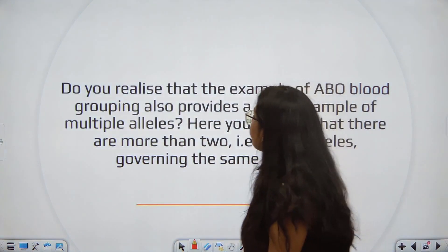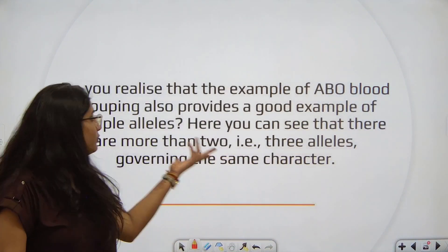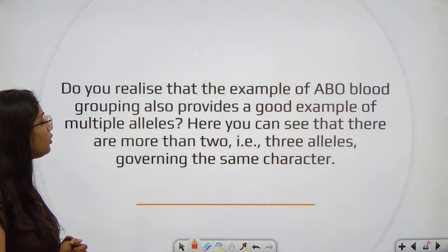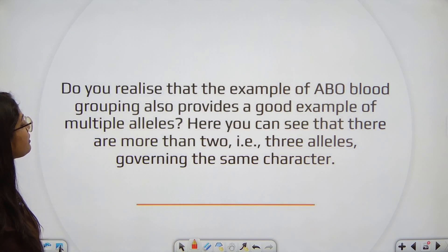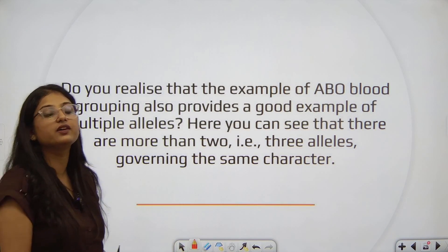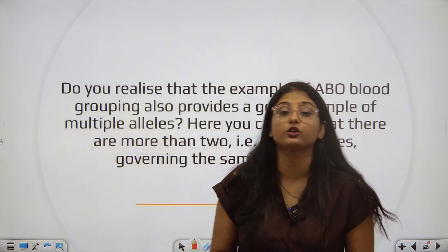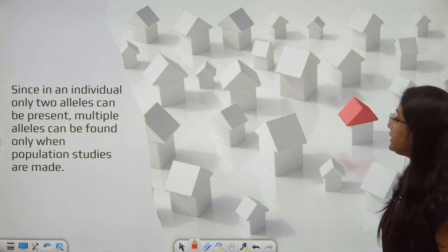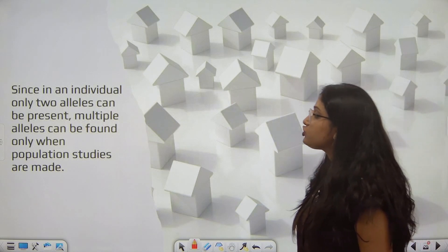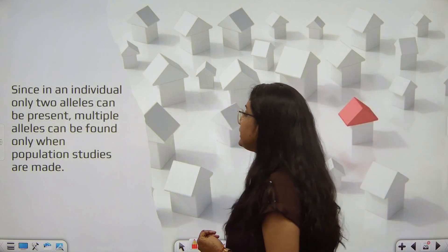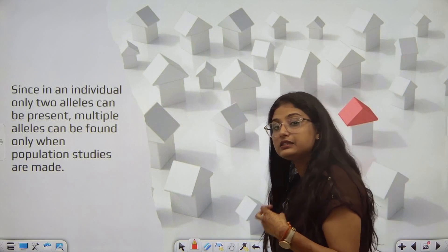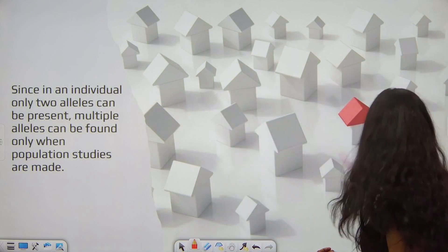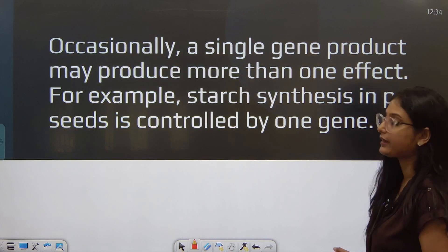The AB blood group system also provides a good example of multiple alleles. There are more than two — three alleles governing the same character. Since in an individual only two alleles can be present at a time, we can observe multiple alleles when population-level studies are conducted.